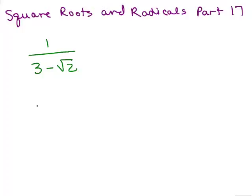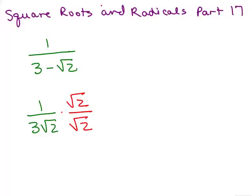When we had a problem like 1 over 3 square roots of 2, I was able to simplify that by multiplying the top and bottom by square root of 2. In the denominator, I would have 3 times 2 or 6, and that's a way to rationalize the denominator. Multiplying by square root of 2, I was able to get a rational number, 6, in the denominator.